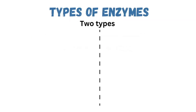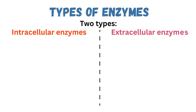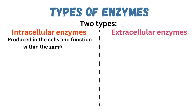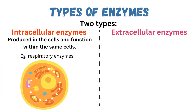There are two types of enzymes: intracellular enzymes and extracellular enzymes. Intracellular enzymes are produced in the cells and function within the same cells that produce them. A good example are respiratory enzymes, which are involved in speeding up the rate of respiration within the cells — produced within the cell and functioning within that same cell.